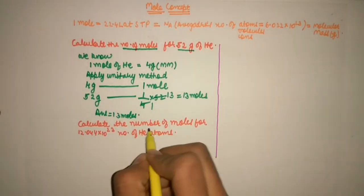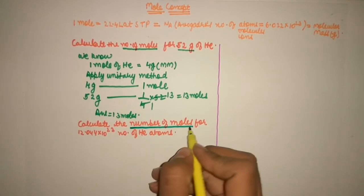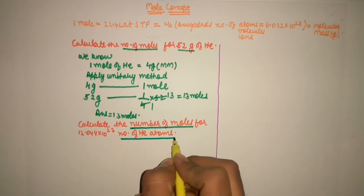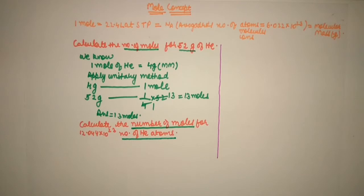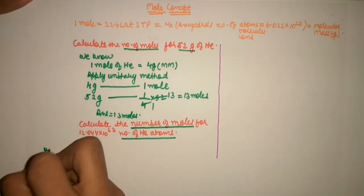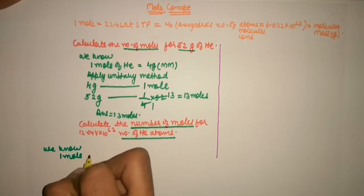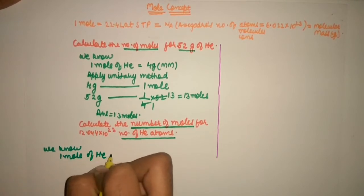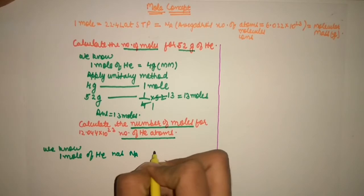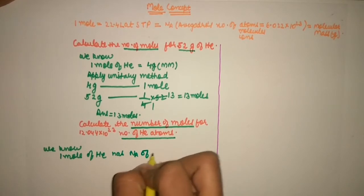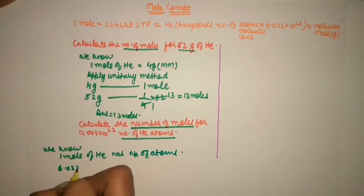We will be solving — see, in this question we have number of moles and number of atoms. These two things are given. Now we take from the equation: one mole and Avogadro's number of atoms. We know one mole of helium has Avogadro's number of atoms — NA, meaning Avogadro's number of atoms. Now we apply unitary method: 6.022 into 10 to the power 23.